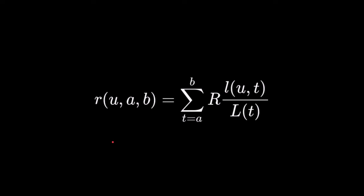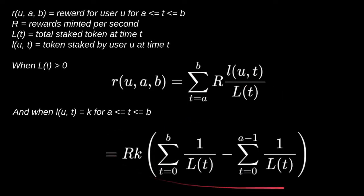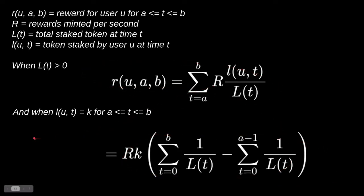In the previous video, we derived the equation that the reward a user can receive from t equals A to t equals B is given by this equation. In this video, we'll try to derive this equation from that equation under the condition that LUT is equal to some constant between the time interval A and B.